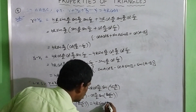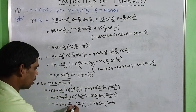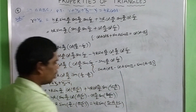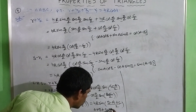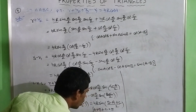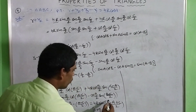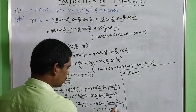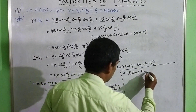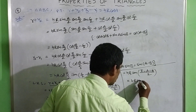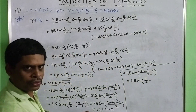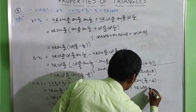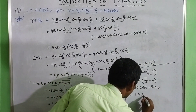In triangle ABC, A + B + C = π, so B + C = π − A. Substituting: 4R sin((π − A − A)/2) = 4R sin(π/2 − A) = 4R cos A. This equals the RHS. Therefore LHS = RHS, and the identity r + R2 + R3 − R1 = 4R cos A is proved.